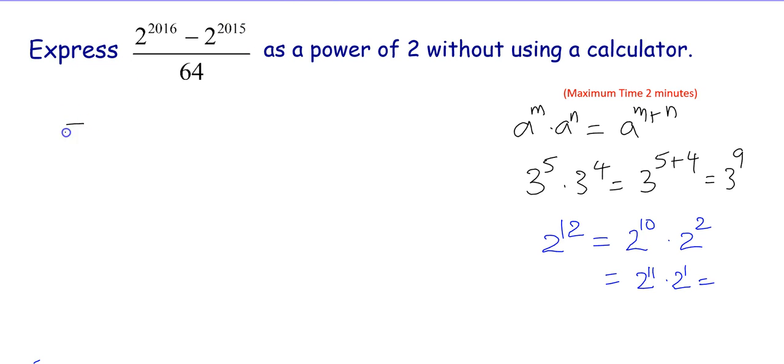I will write this as 2 to the power of 2015 times 2 to the power of 1. 2016 is separated as 2015 plus 1, making use of this product property of exponents. And the next term, the 2 to the power of 2015, you can leave it as it is.